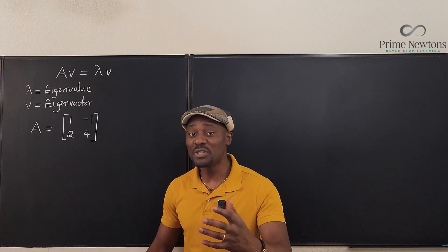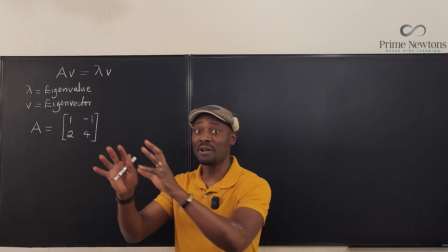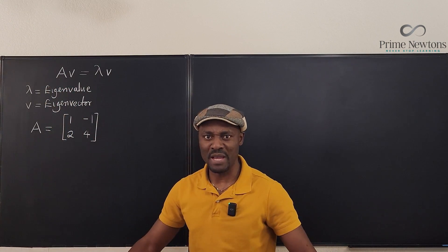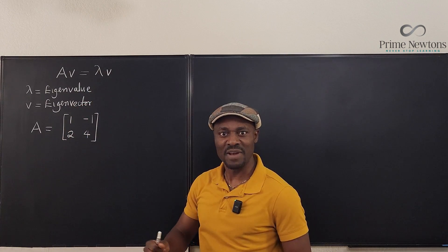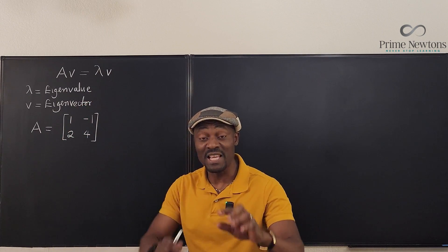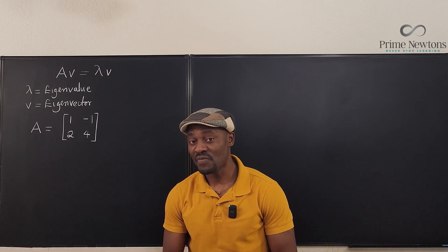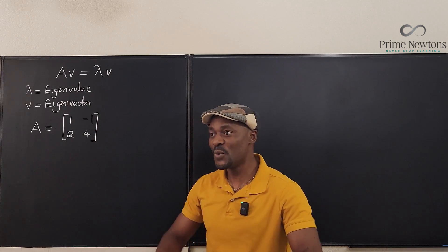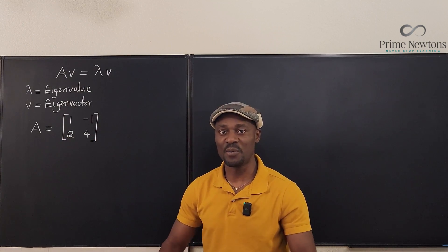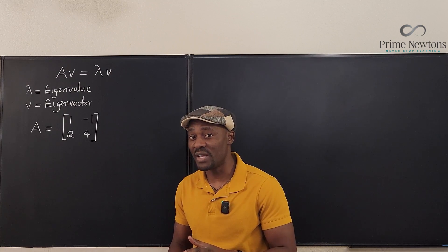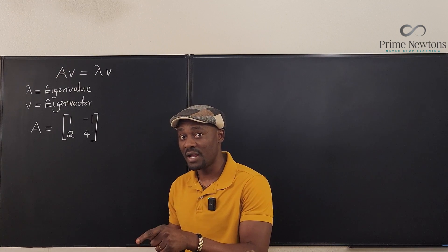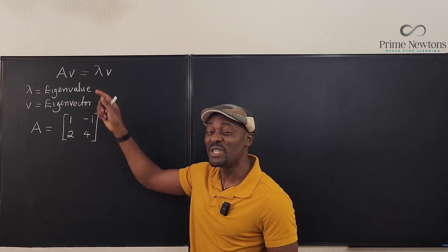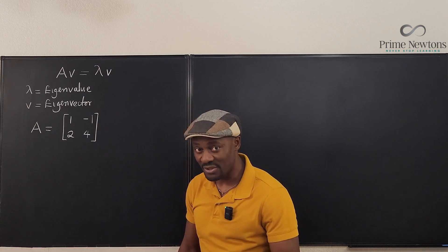Instead of multiplying something by the entire matrix, you could just multiply by the eigenvalue. The eigenvalue would do the same thing the entire matrix would do, but it would only do it to its own eigenvector — not to just any random vector. So if you want to transform a vector using a matrix, you can do it using the eigenvalue and the corresponding eigenvector.